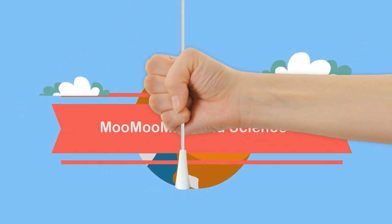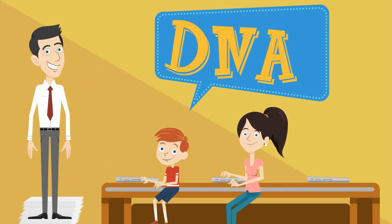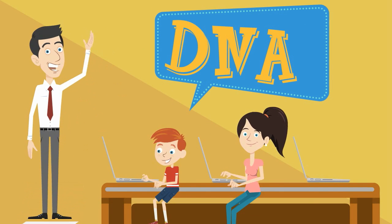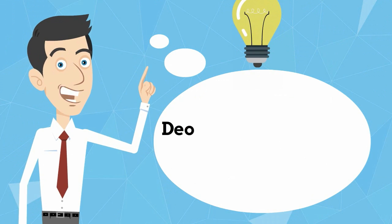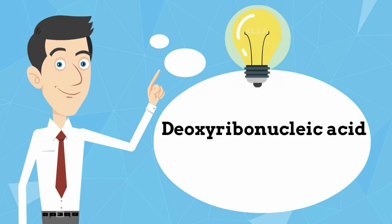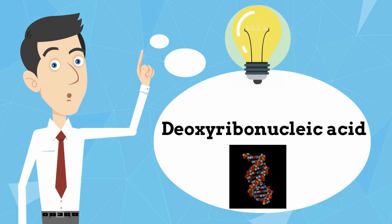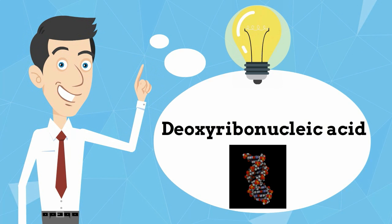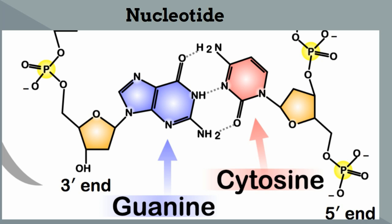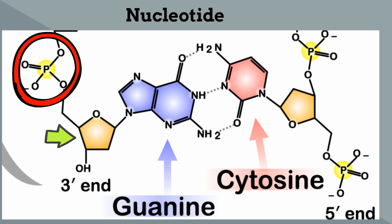Welcome to MooMooMath and Science. In this video I'd like to talk about the structure of DNA. DNA stands for deoxyribonucleic acid and it is a very long molecule found in the nucleus of eukaryotic cells. It is very long because it is made up of subunits called nucleotides. Each nucleotide is made up of a phosphate bonded to a sugar, and the sugar is deoxyribose.